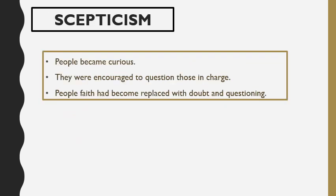The last one we're going to learn about is skepticism. People became very curious about the world because for many centuries they had only been taught about Christianity — about religion — and everything had to be done just for religion. They were then encouraged to question those in charge. Leaders had been placed there as religious leaders, and ordinary people started questioning this. Their faith started becoming replaced with doubt and questioning: Why do things happen like this? Should we believe in this religion? Is there such a thing as God? This is what we call skepticism.